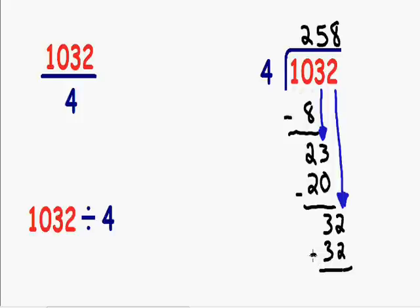Once again, we need to subtract our numbers. 32 minus 32 is equal to 0.